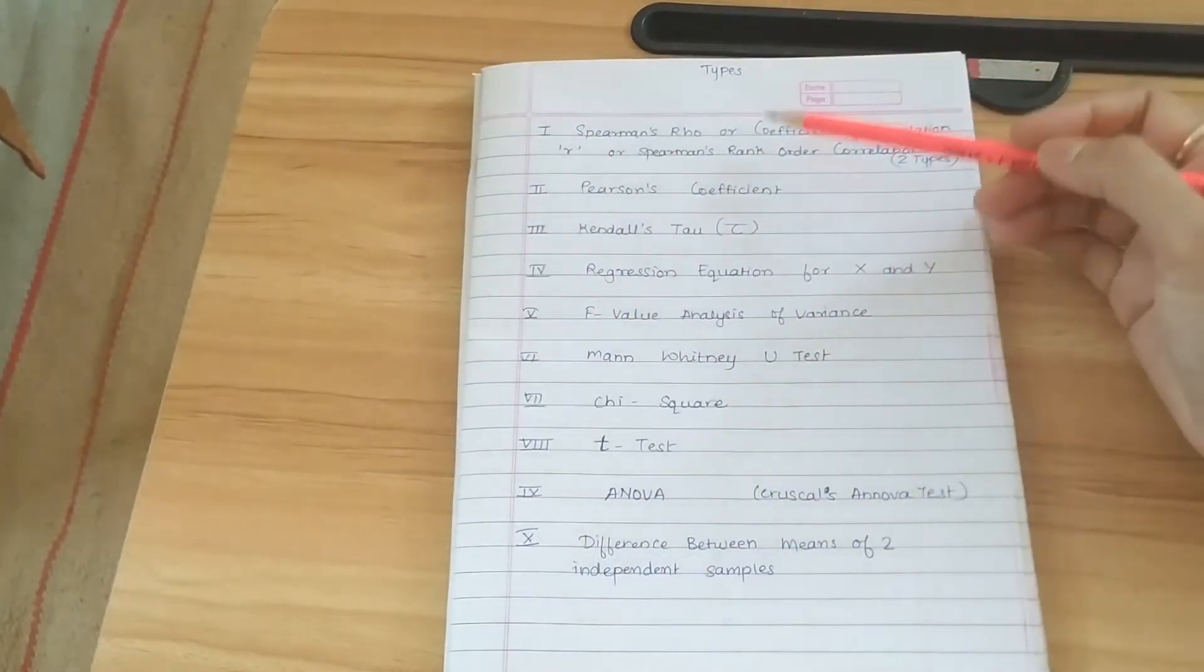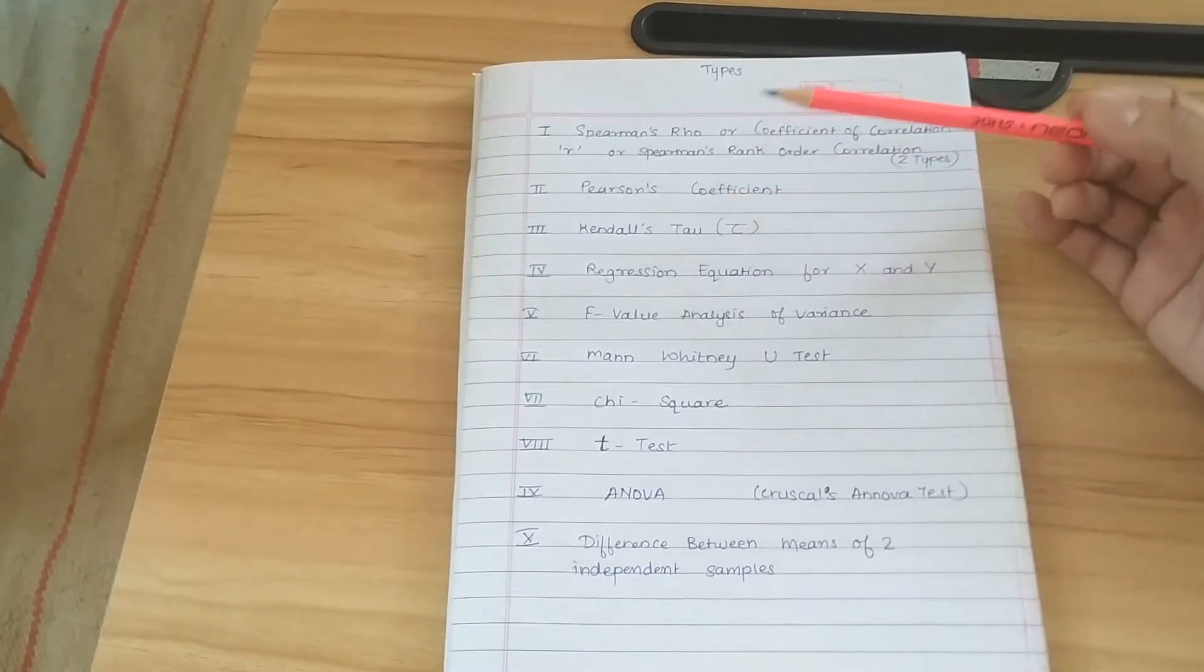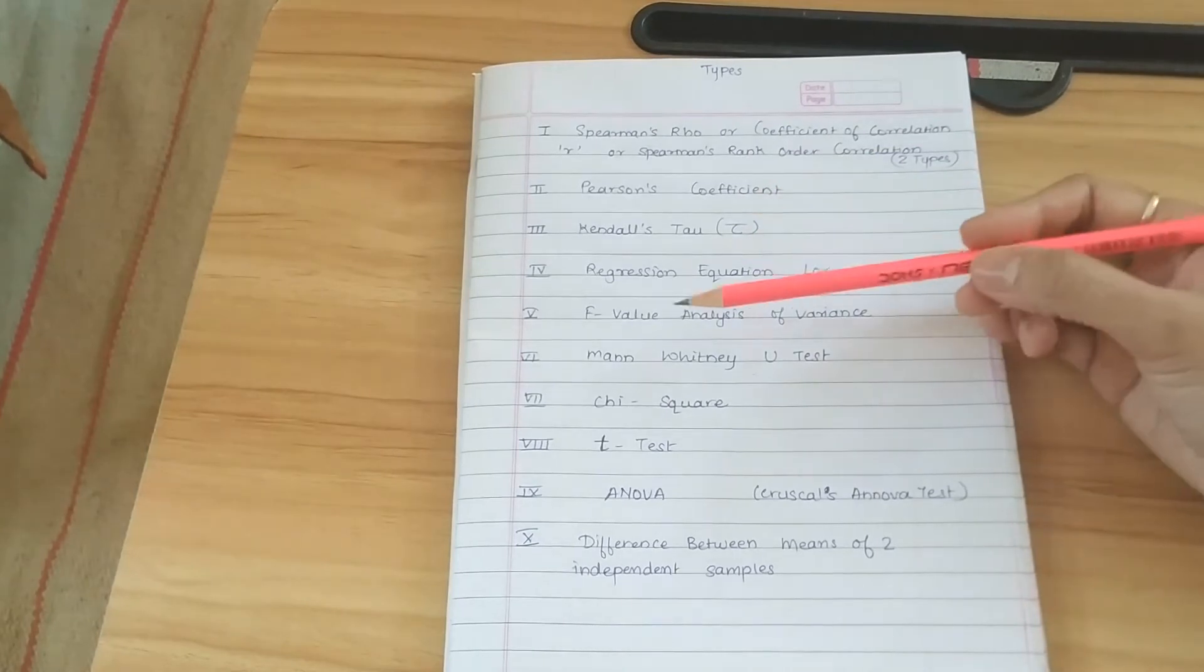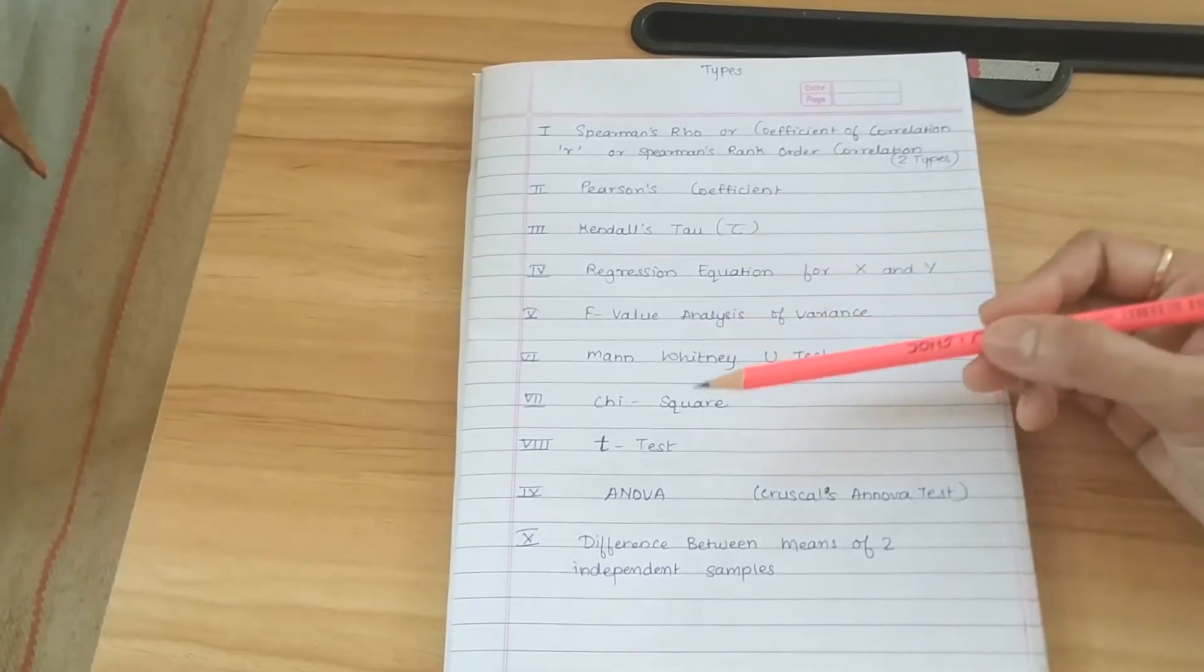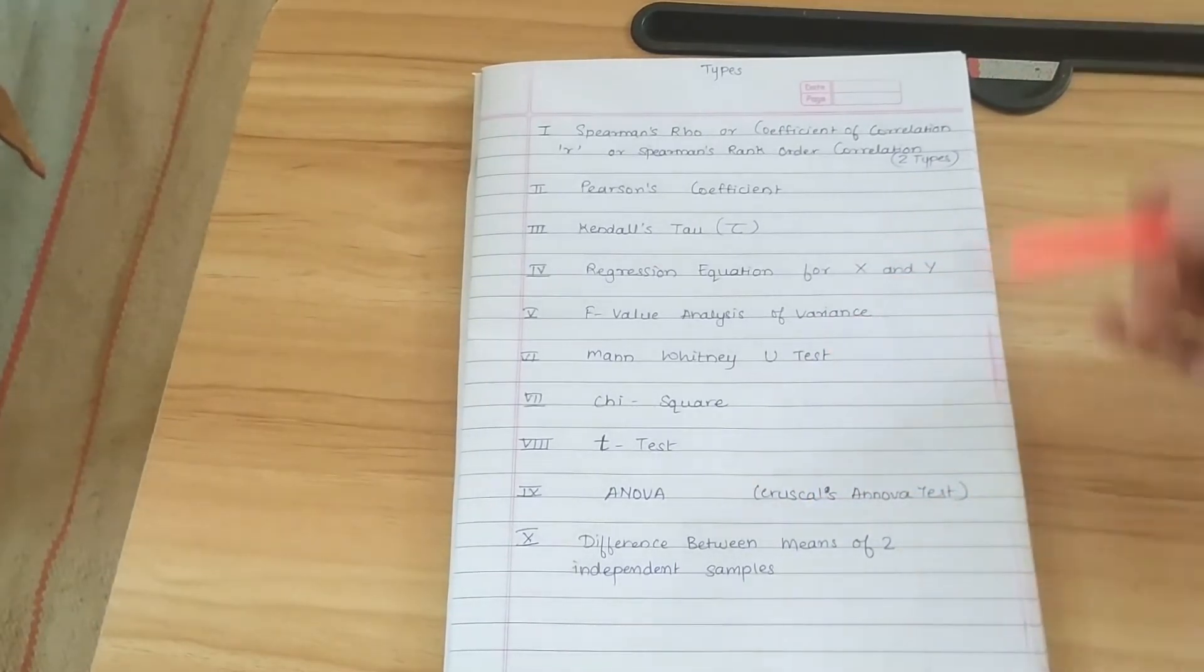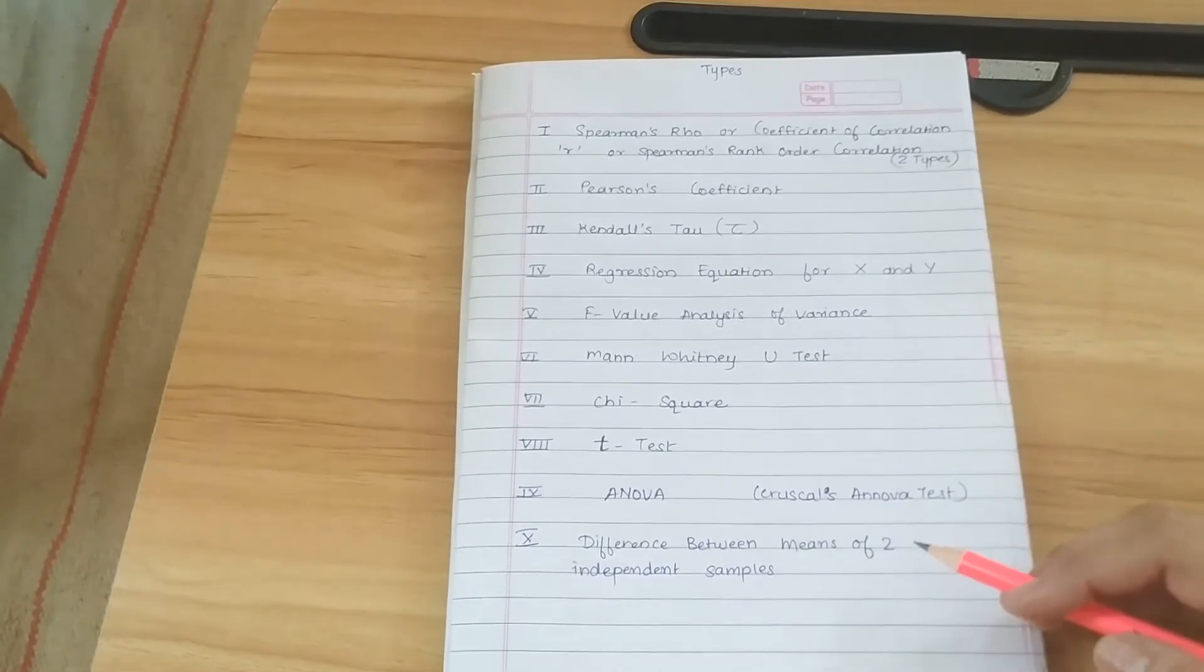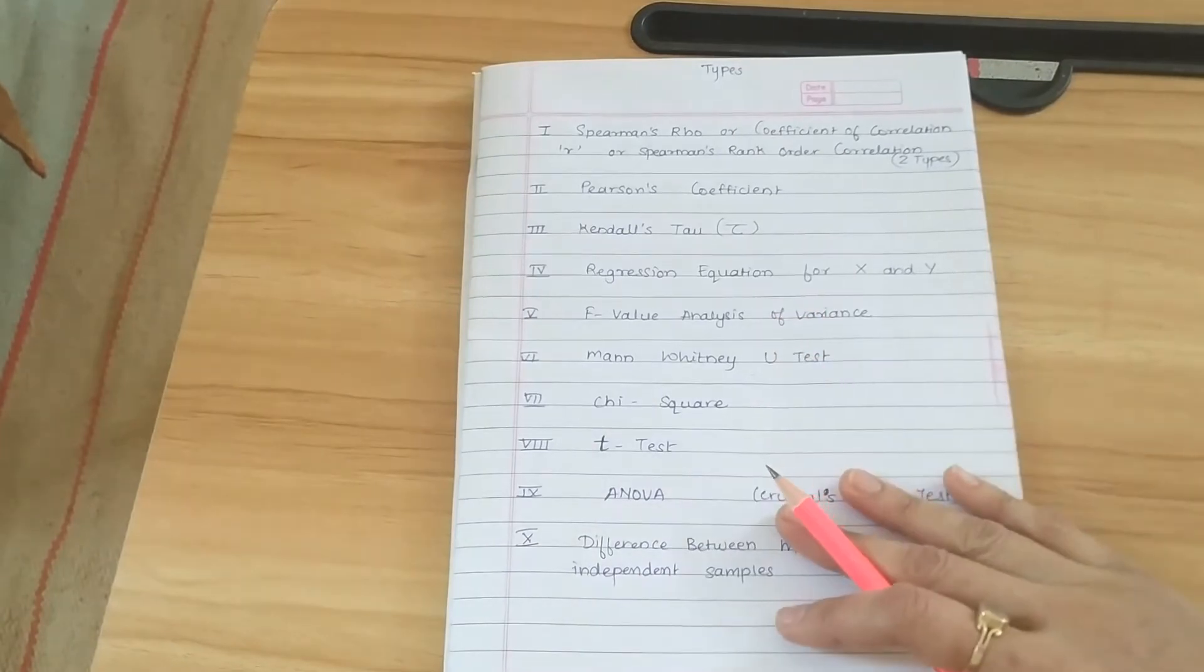The first one is Spearman's rho, then Pearson's coefficient, Kendall's tau, regression equation, F menu analysis, Mann-Whitney, chi-square, t-test, and ANOVA difference between means of two independent samples. So these are all the types of problems that appear in the question paper.